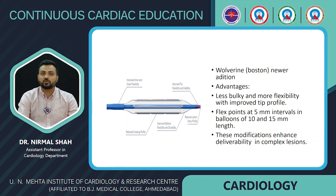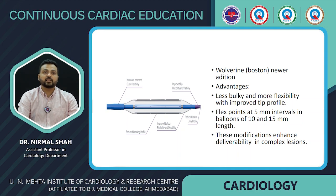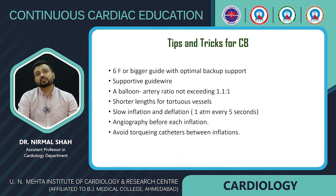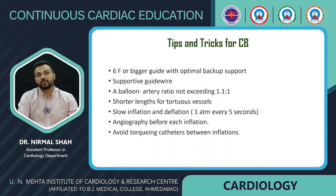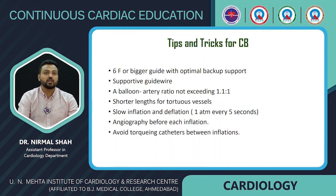A newer addition to cutting balloons is the Wolverine balloon from Boston Scientific, which is less bulky and more flexible with an improved tip profile. It has flex points at 5 mm intervals in 10 and 15 mm length balloons, enhancing deliverability in complex lesions. Tips and tricks for cutting balloon use: use a 6 French or larger guide with optimal backup support, use a supportive guide wire, keep balloon-to-artery ratio no more than 1.1:1, use shorter length in tortuous vessels, inflate slowly at 1 atmosphere every 5 seconds, perform angiography before each inflation, and avoid working the catheter between inflations.